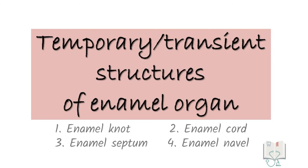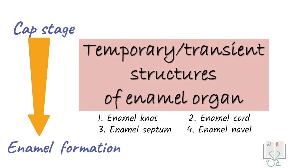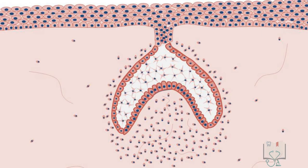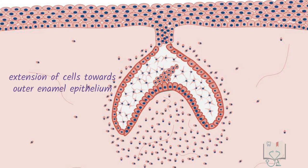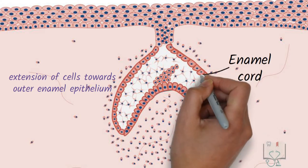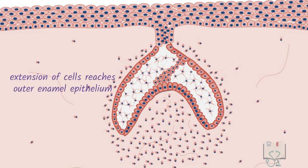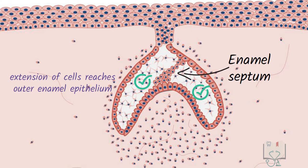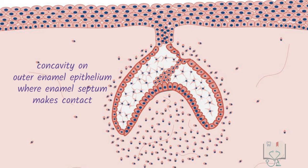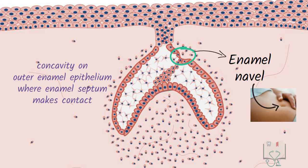There are a few structures known as transient or temporary structures of the enamel organ. These structures form in the cap stage and then disappear before enamel formation begins. The enamel knot is a structure of dense collection of cells in stellate reticulum just above the inner enamel epithelium. If the densely packed cells form a vertical extension towards the outer enamel epithelium, it is called the enamel cord. If this vertical extension reaches the outer enamel epithelium, it is called the enamel septum, as it divides the stellate reticulum into two compartments. The area on the outer enamel epithelium where the enamel septum meets shows a slight concavity called the enamel navel, as it looks similar to the umbilicus or navel on the abdomen.